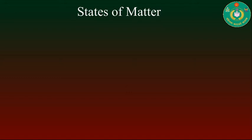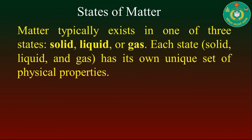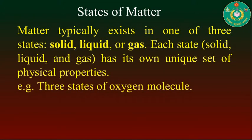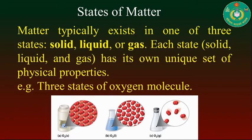Now we move on to the first topic: the states of matter. Every chemical substance has three states — solid, liquid, and gaseous. For example, an oxygen molecule has three states: solid state, liquid state, and gaseous state. Solid state is represented as subscript (s), liquid state as subscript (l), and gaseous state as subscript (g).